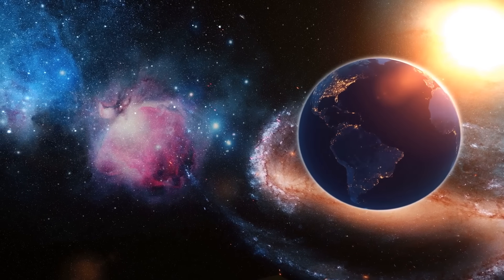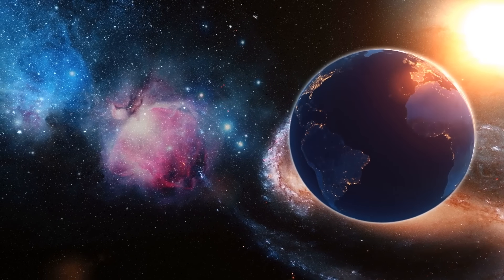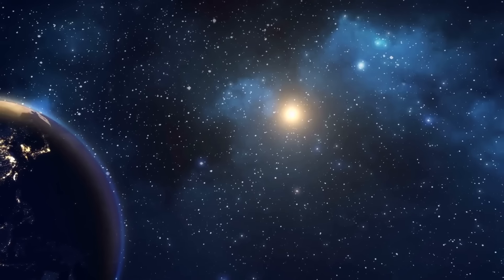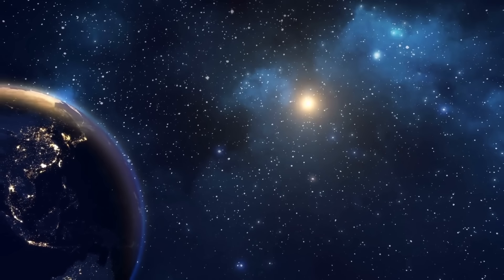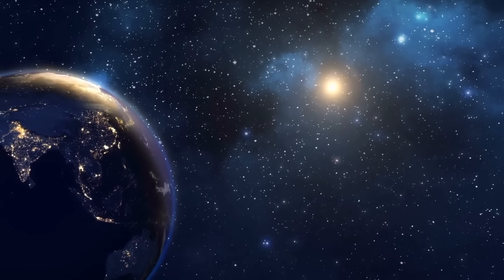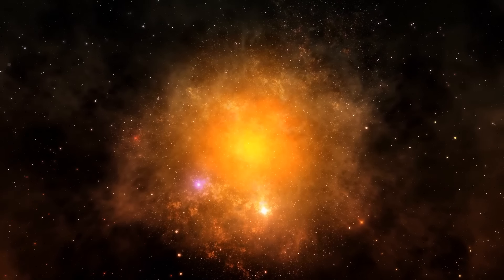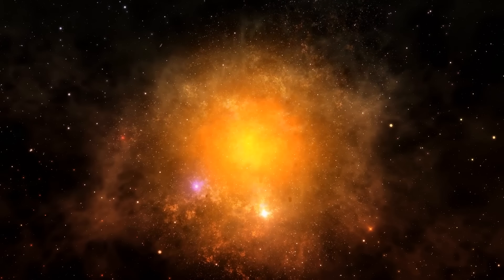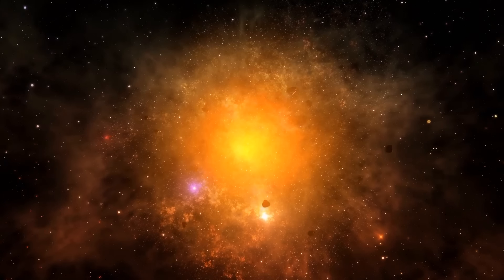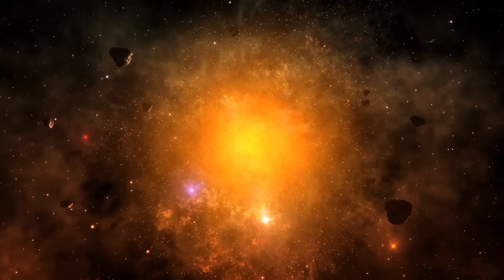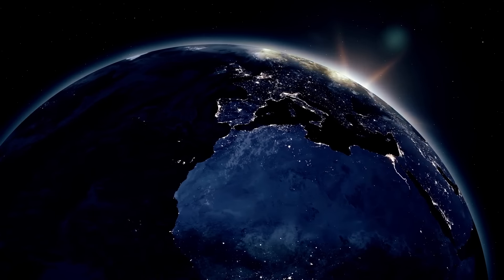Speaking of potential impacts on Earth, it is essential to emphasize that Betelgeuse is located at a distance of about 700 light years. At this considerable distance, a supernova would not pose a direct threat to our planet in terms of physical impact. Despite its immensity, the energy and radiation released by the explosion would be sufficiently dispersed to reach Earth harmlessly.